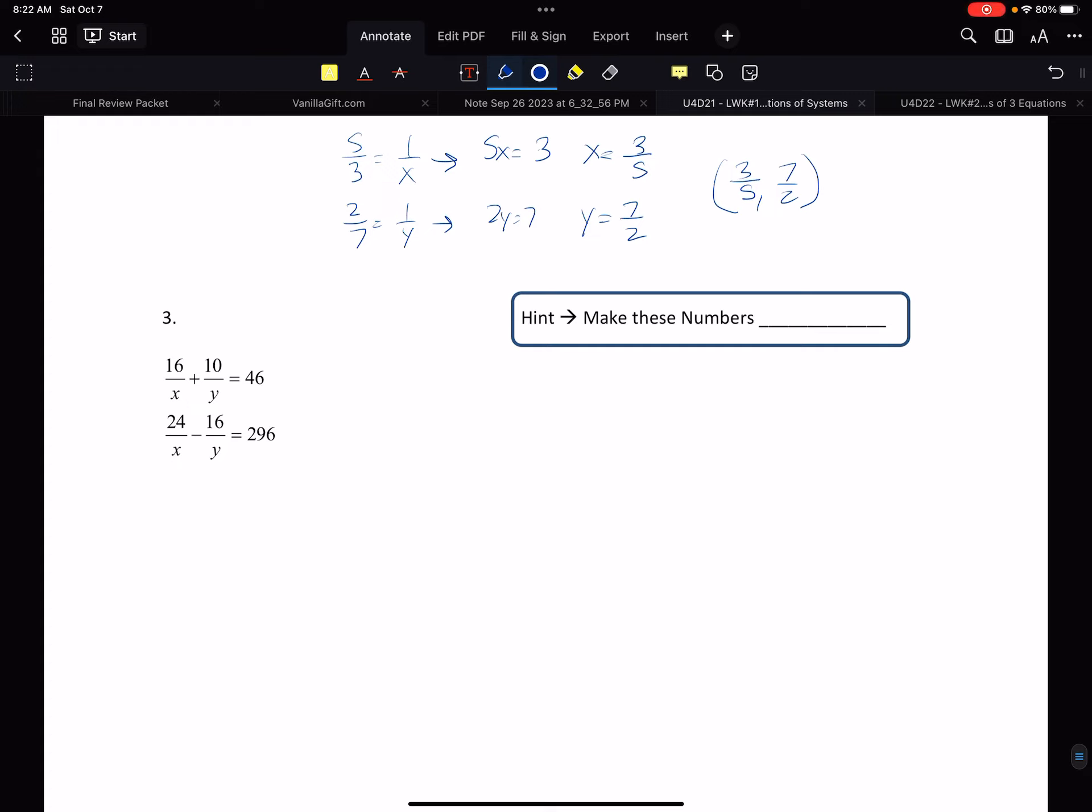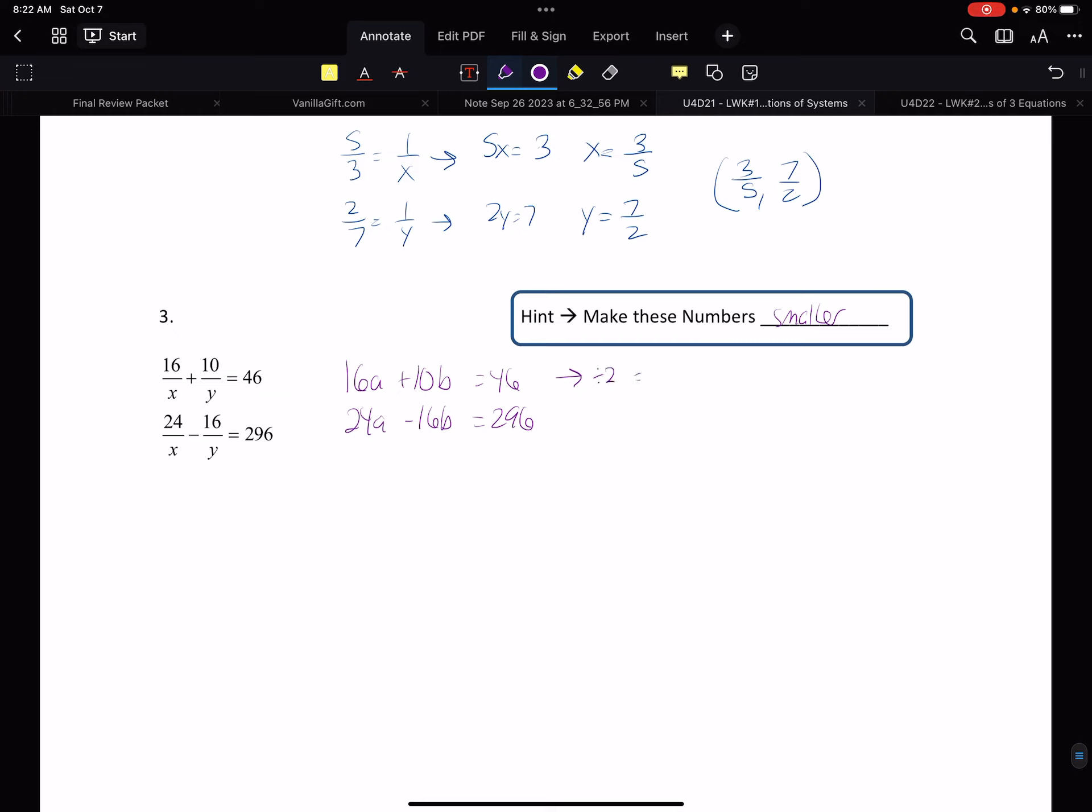Last example. Giving us an idea kind of combining both. So I'm going to put my double. I got 16A plus 10B equals 46. 24A minus 16B equals 296. And so one thing I could do here is simplify. Make these numbers smaller. A lot of people, when they work with systems, they think we always have to shrink it. We always have to grow it. We always have to multiply it by something. But you know what? If I took this equation here, 16, 10, and 46, if I divided it by 2, I got 8A plus 5B equals 23. If I took this bottom equation, divided it by 8, I got 3A minus 2B equals 37.